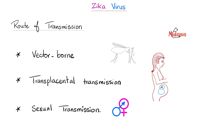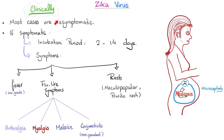Routes of transmission of Zika virus: it is vector-borne via the Aedes aegypti mosquito, transplacental (vertical transmission from mother to baby), or via intercourse. Most cases are asymptomatic. If symptoms occur, the incubation period is 2 to 14 days. Symptoms include low-grade fever, flu-like symptoms such as arthralgia, myalgia, and malaise, conjunctivitis — non-purulent because this is a virus, not a bacteria — and a maculopapular pruritic rash.